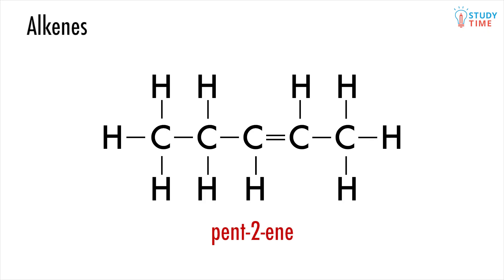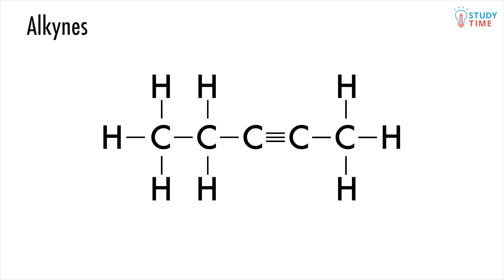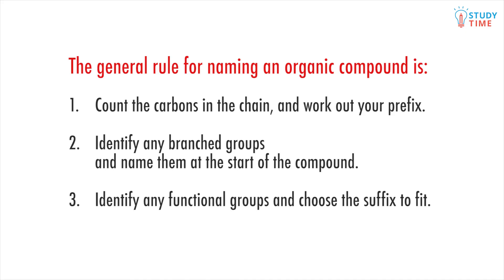Some compounds are again very similar to alkanes and alkenes, but there's a triple bond instead of a double as the functional group — we call these alkynes. As you can probably guess, their suffix will be '-yne'. As we talk about different types of compounds in coming videos, we will describe each of their specific suffixes, but for now it's important that you understand how the pattern works. To summarize, the general rule for naming an organic compound is: first, count the carbons in the chain and work out your prefix; second, identify any branched groups and name them at the start of the compound; and third, identify any functional groups and choose the suffix to fit.